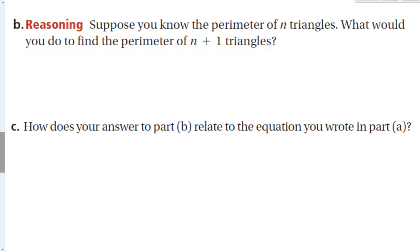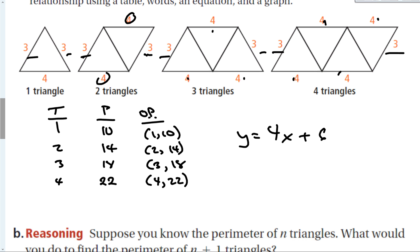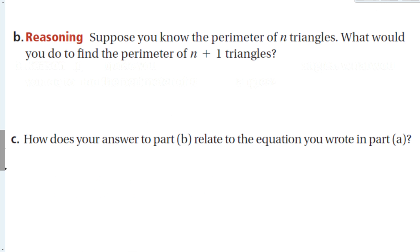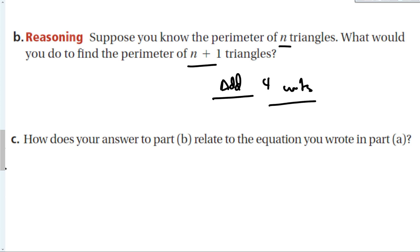For part B: if you know the perimeter of n triangles, to find the perimeter of n+1 triangles, you simply add 4 units. For part C: this relates to the equation because the 4x term means every triangle you add increases the perimeter by 4. If you know the perimeter of n triangles, one more just adds 4 units.